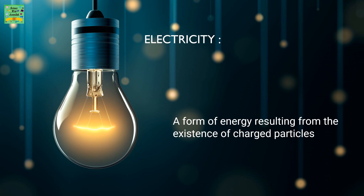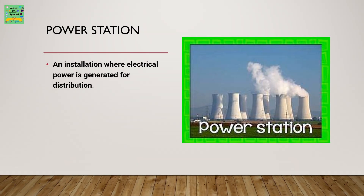Electricity: it is a form of energy resulting from the existence of charged particles. Power Station: an installation where electrical power is generated for distribution. Here is a picture of a power station.